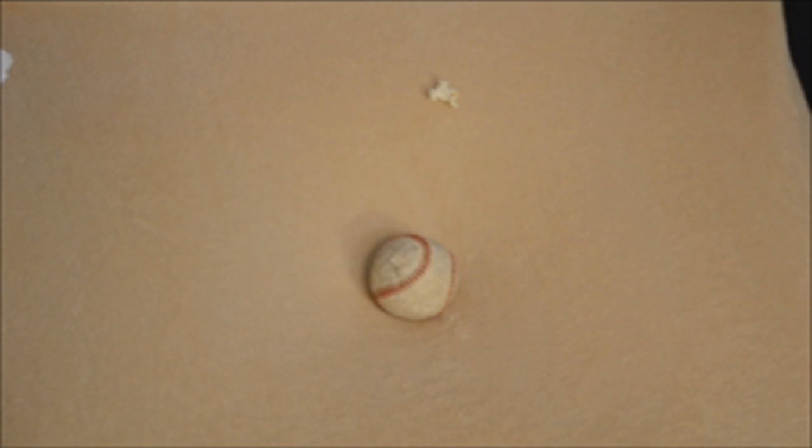But when the marble gets close enough to feel the gravitational field of the baseball... Then the straight path curves. Exactly, and it starts to orbit. Of course, here the marble experiences friction, and so it slows down and falls in. In space, Earth doesn't encounter any real friction, so it just keeps orbiting the sun.